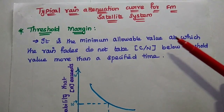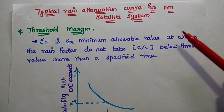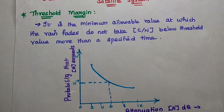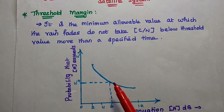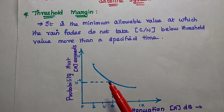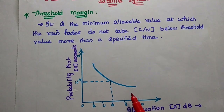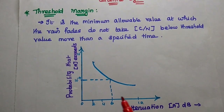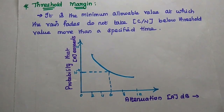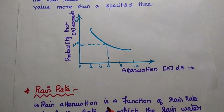Next, we consider the typical rain attenuation curve for a frequency modulation satellite system. The threshold margin level is the minimum allowable range at which rain fades do not take the carrier-to-noise ratio below the threshold value more than a specified time. We must keep the carrier-to-noise ratio at the specified value, not below the threshold — this is represented as the threshold margin value.